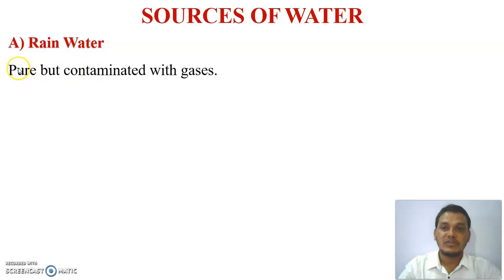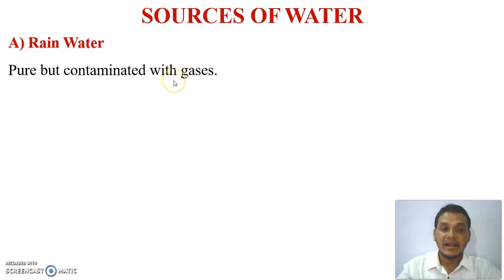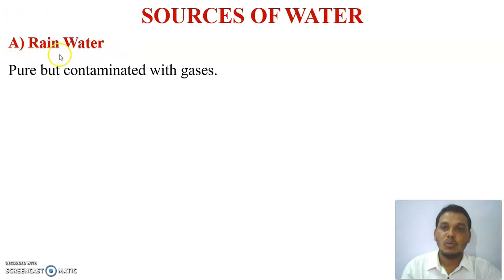During the passage of rain from the atmosphere to the earth, pure water gets contaminated with these gases. These dissolved gases act as a more corroding medium. That's why rain water is also one of the impure forms of water.